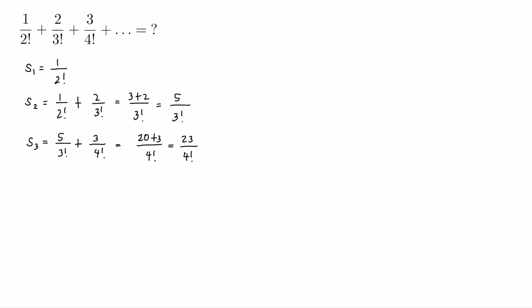From this we can already see a pattern for the nth partial sum, because this 23 is actually 4 factorial minus 1, and this 5 here is equal to 3 factorial minus 1, and of course this 1 is also equal to 2 factorial minus 1.